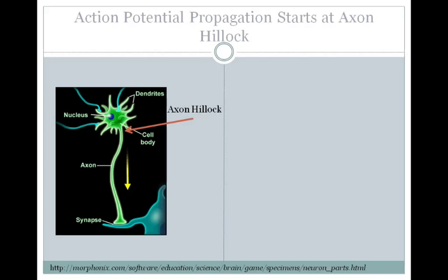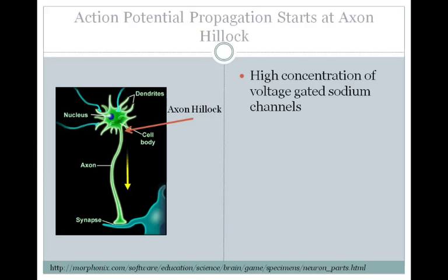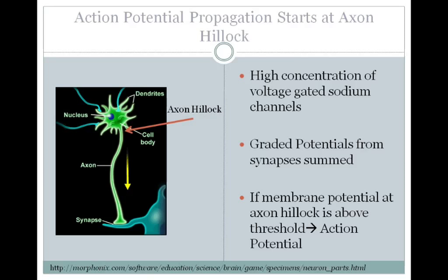Action potential propagation starts at the axon hillock, shown here. The axon hillock has a very high concentration of voltage-gated sodium channels. It sums the graded potentials that come from the synapses onto the dendrites and soma, which do not have the voltage-gated sodium channels.